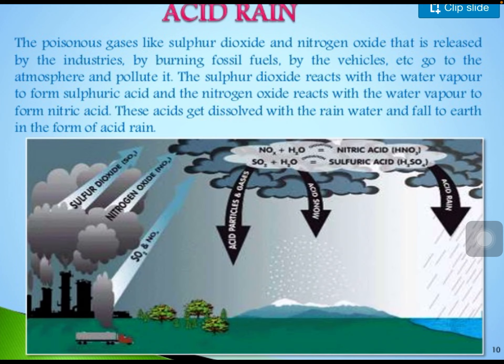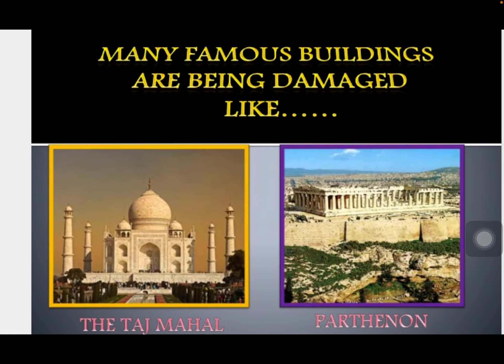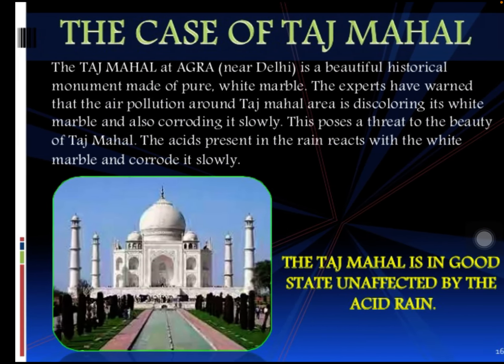As shown in the picture, harmful gases mix with water to form nitric acid and sulfuric acid, which then mix with rain water and fall to the earth — this is acid rain, which is very harmful. Many famous buildings like the Taj Mahal and the Parthenon are being damaged due to acid rain. Acid rain is also harmful for crops and agricultural fields.